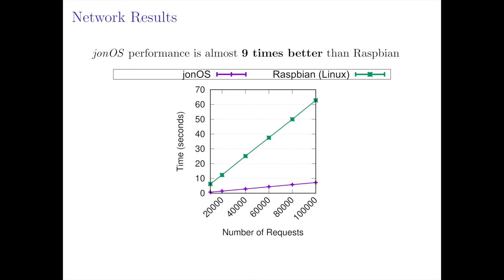In the network results, lower is also better. The x-axis represents the number of requests by the client and the y-axis is the time the echo server needs to answer all those requests, expressed in seconds. The performance offered by John OS is up to nine times better than Raspbian, due to three factors: first, context switching forces the network to be shared with other processes, directly increasing latency; second, in Linux, when a message is sent, the kernel decides when to introduce it into the NIC, which can queue the message and produce latency increases; third, we implemented a high-performance UDP/IP stack in John OS designed to avoid redundant or unnecessary checks that affect performance.